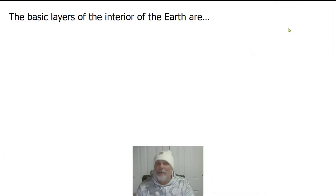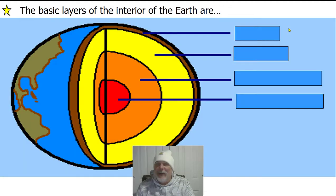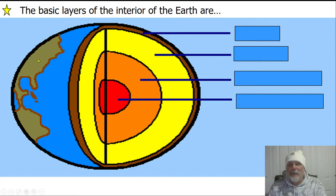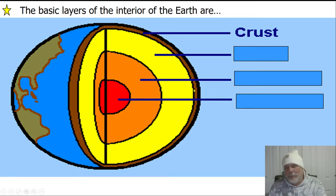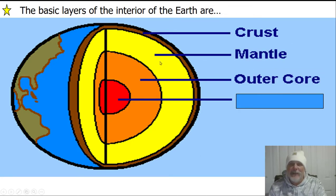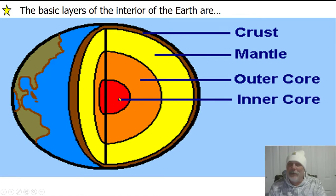The basic layers of the interior of the Earth that I'm going to expect you to know are these. I would draw a very simple sketch of the interior of the Earth, going from the outside in. The outermost layer is the crust — that's where we are. Below that is the mantle, then you have the outer core, and the inner core.